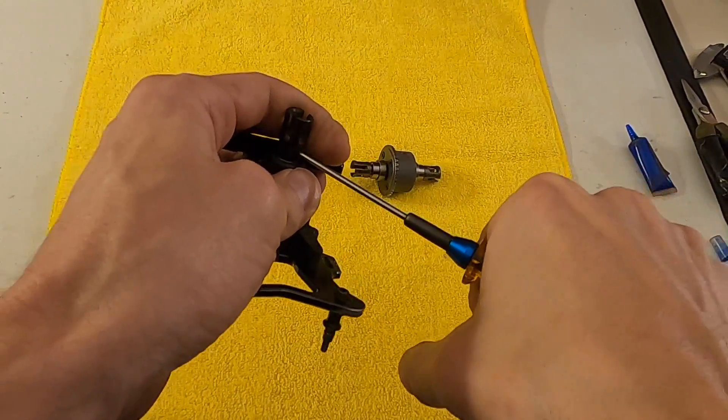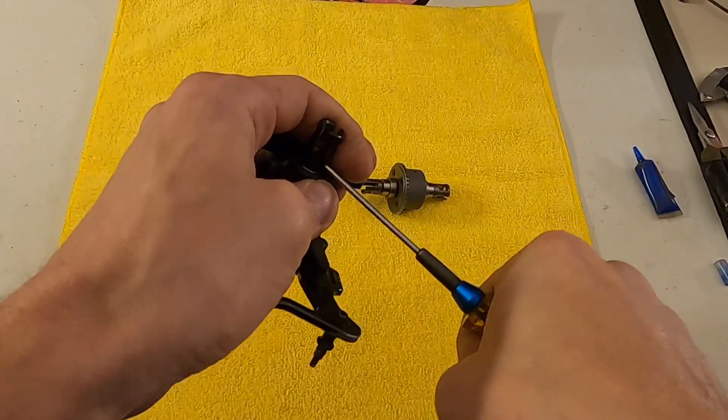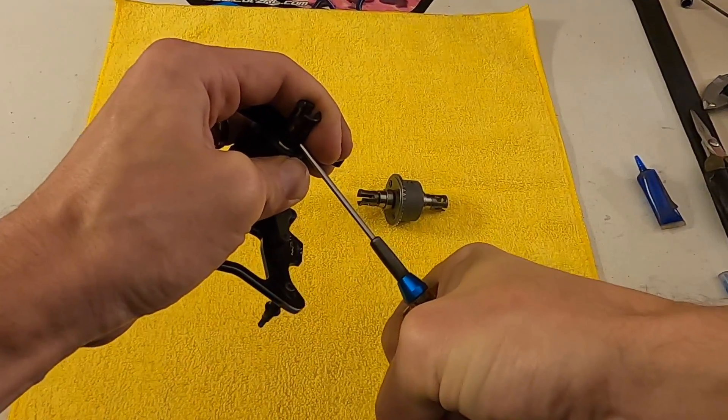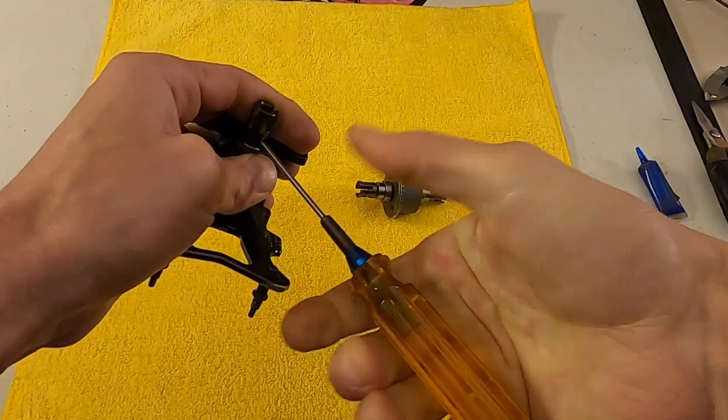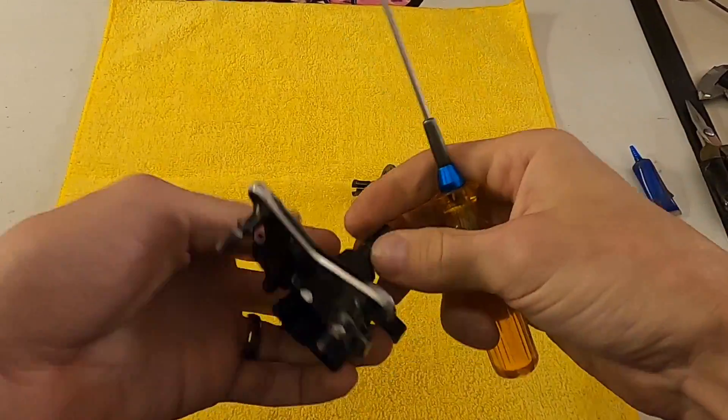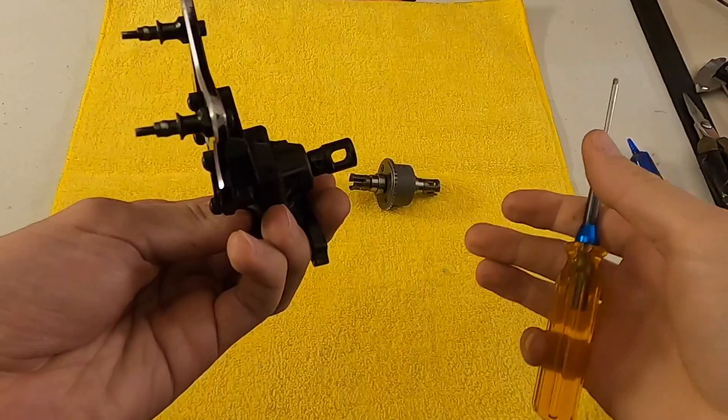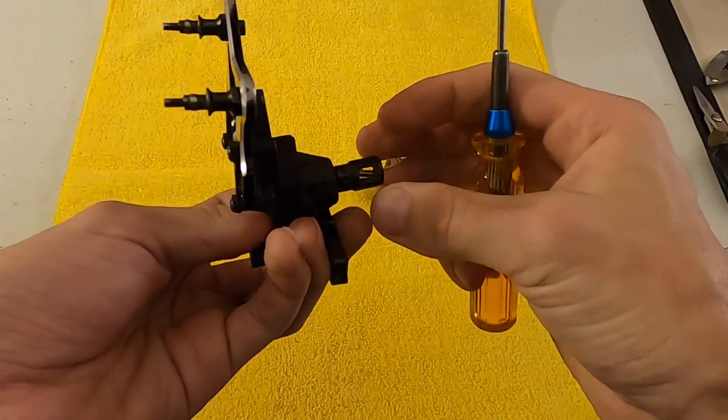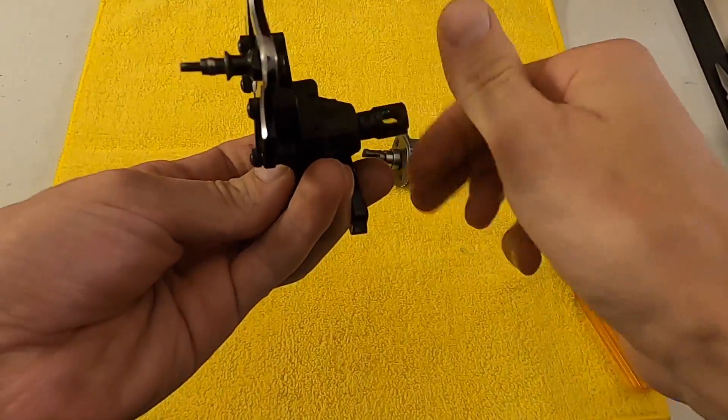Once I have that position set, I crank down on it. This is what I call a 10-second hold. So I crank and go one, two, three, four, five, six, seven, eight, nine, ten, and then release. Hurts my hands, but I've had really good luck with that. Make sure that this is seated really tight up against it.